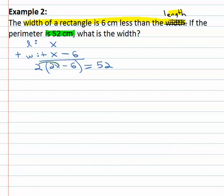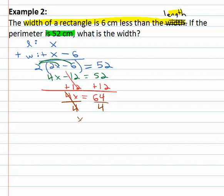So let's solve it. Distribute the two through gives us 4x minus 12 equals 52. Adding twelve to both sides, 4x equals 64, and finally dividing both sides by four gives us x equals 16.